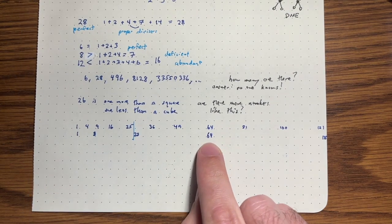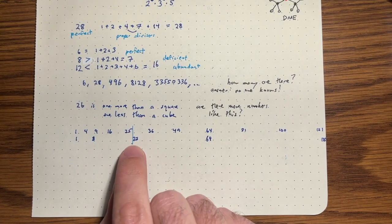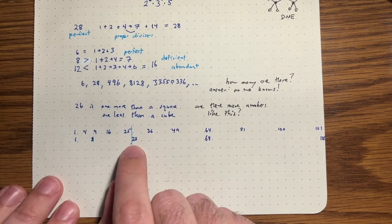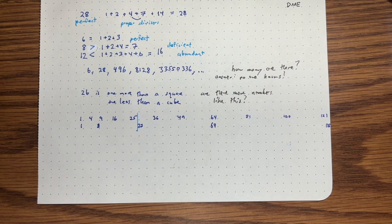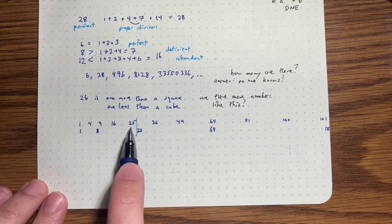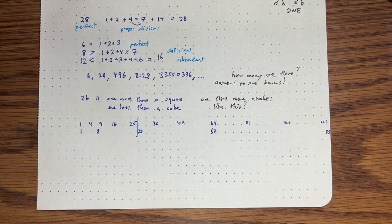So somehow these lists of numbers can't get too close together. They can actually get exactly the same. And this happens infinitely many times. But they can't really get, seemingly they can't get within two of each other very often. And so let's say we wanted to actually prove that this can't happen too often. Maybe 26 is the only one. How would we do that?